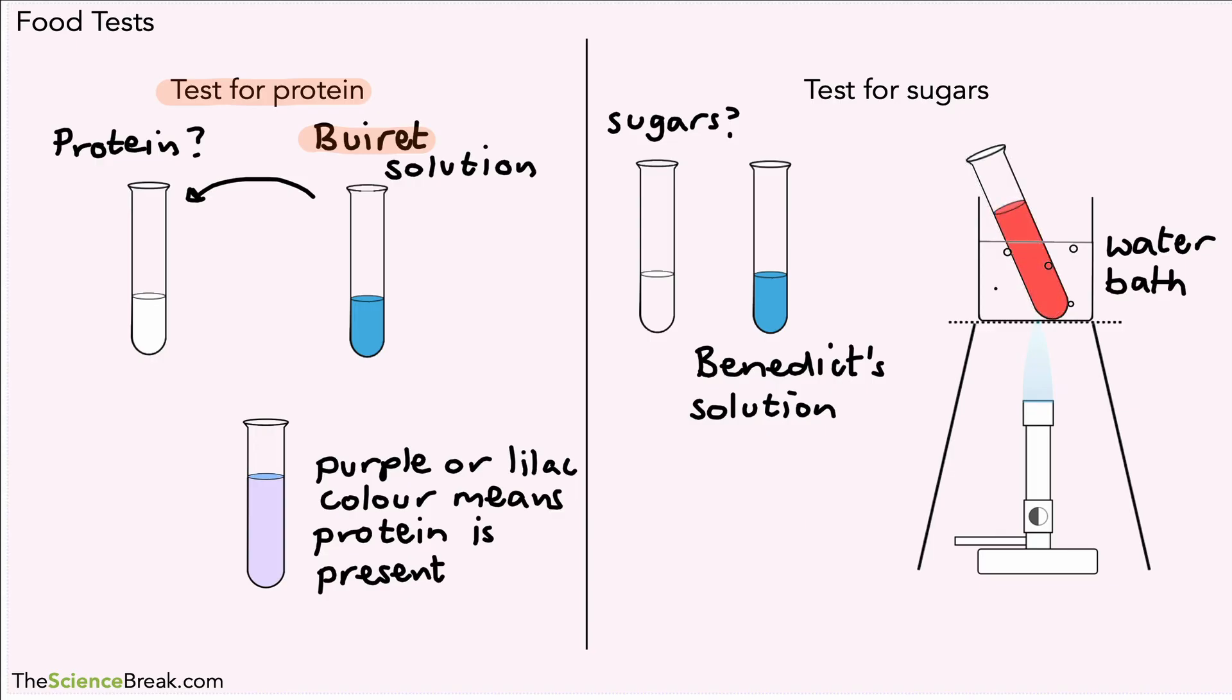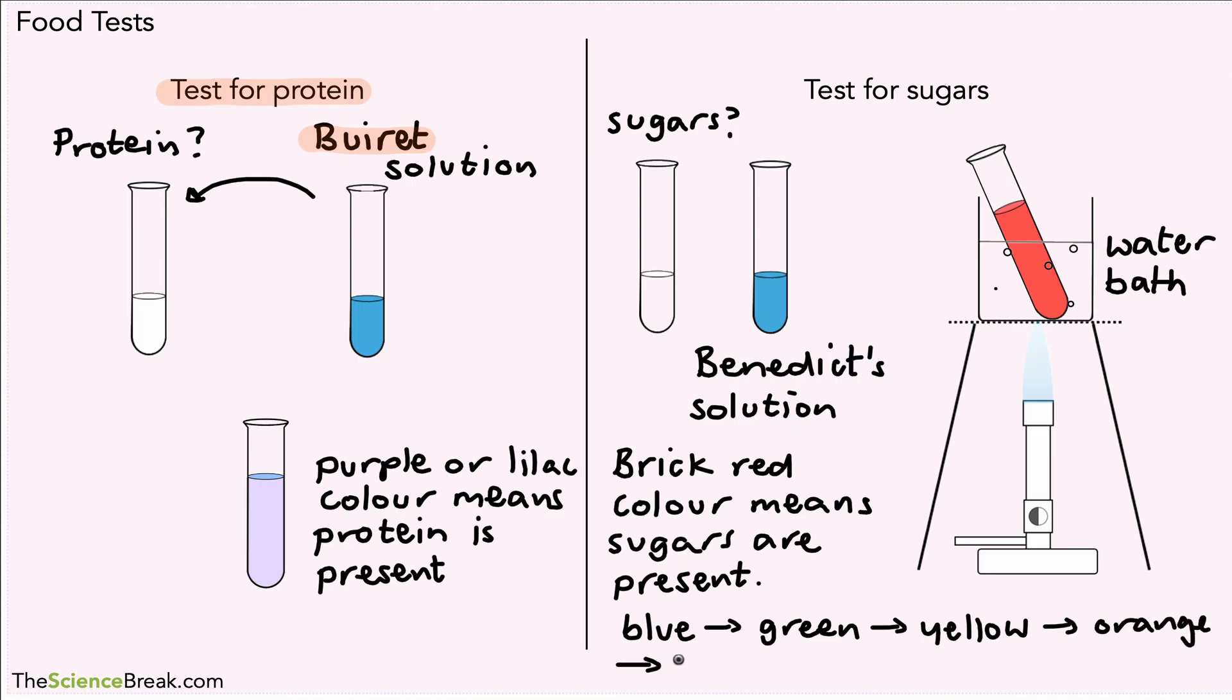If we see a color change to a brick red color, we know that sugars are present. It's probably worth pointing out that we see a range of colors - we start off with blue, then green, yellow, orange, and eventually brick red.